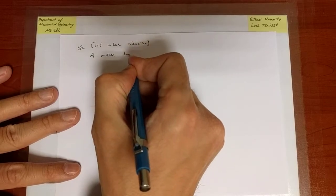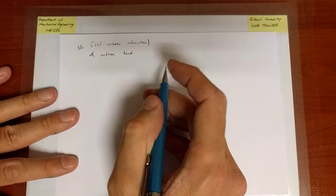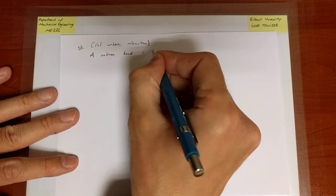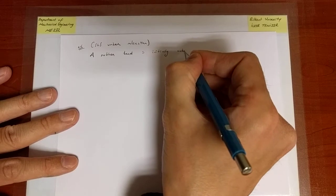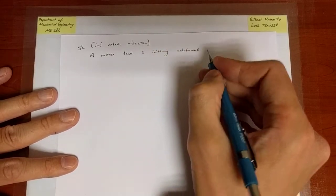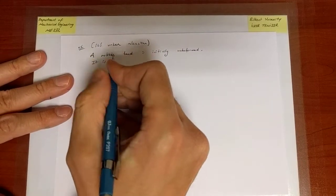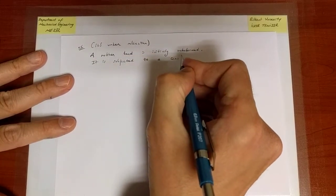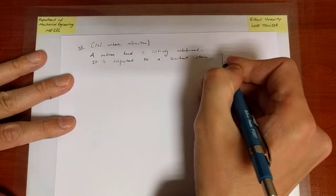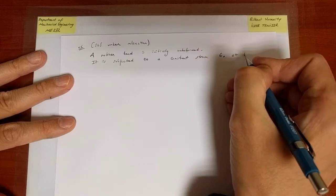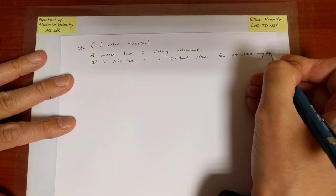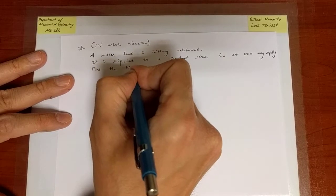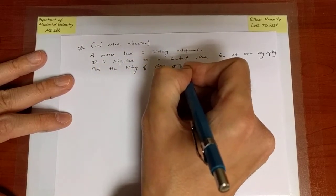So a rubber band, let's say rubber is a polymeric material, we expect viscoelastic material behavior. A rubber band is initially undeformed and it is subjected to a constant strain epsilon_0 at t equals 0 very rapidly. The question is find the history of stress, namely find sigma(t).